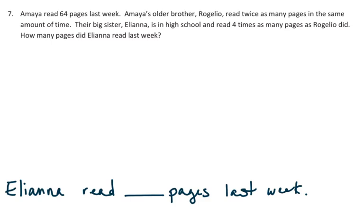So I'm going to do a tape diagram to solve this problem, and I have Amaya who reads 64 pages. This is how many she reads. Then I have her brother, and he reads twice as many pages. So he has this chunk, which is the same size, and twice as many. So this one's 64, and this one's 64.